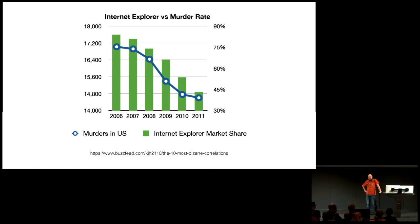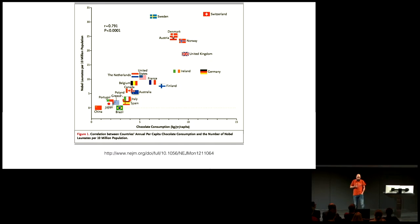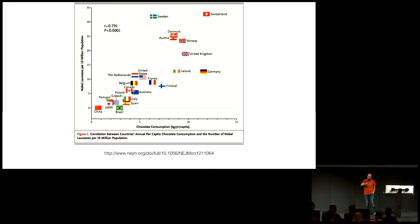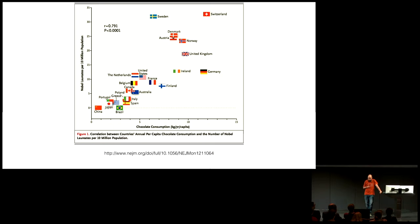Internet Explorer and, again, violent crime — there's a nice correlation there. And finally, one of my favorites: if you look at chocolate consumption per country and the number of Nobel prizes per country, there's a nice linear correlation. So more chocolate means more Nobel prizes. You see Switzerland off the chart. There are a couple of nice outliers: Sweden has more Nobel prizes than expected, and Germany — for once — the Germans are not very efficient: they consume more chocolate than they should compared to the number of Nobel prizes.